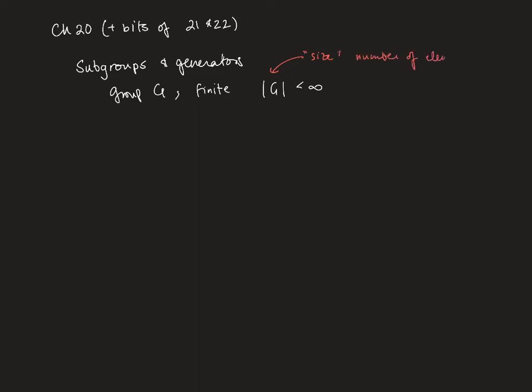We have another way of describing the number of elements. The definition that I want to introduce is the idea of order. The order of a group is the size or the number of elements in the group.